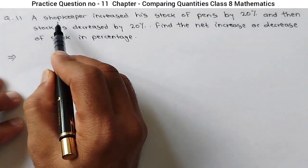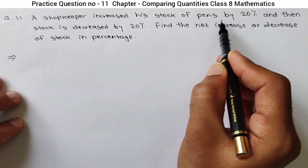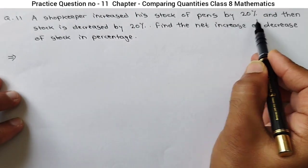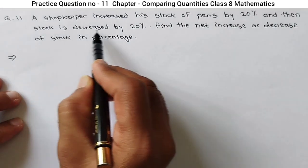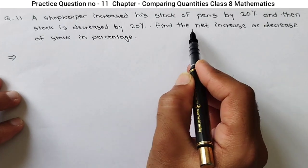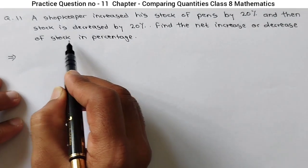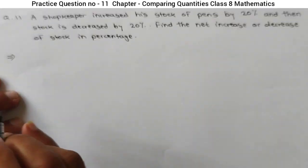The question is: a shopkeeper increases his stock of paints by 20% and then the stock is decreased by 20%. Find the net increase or decrease of stock in percentage.